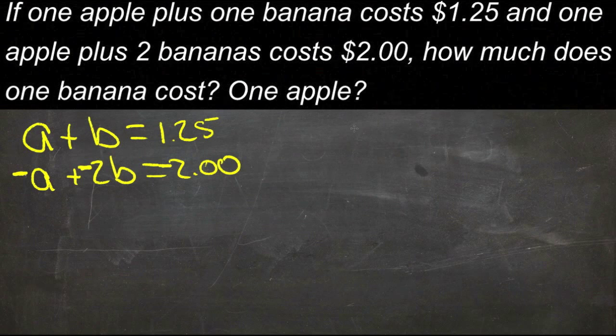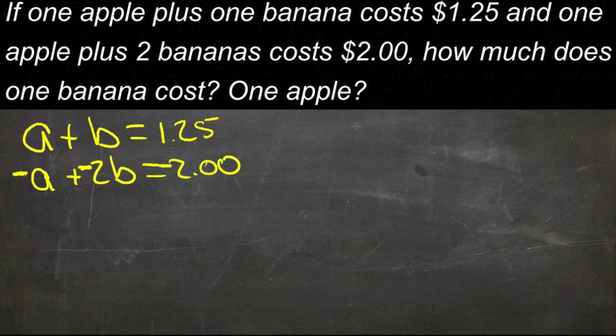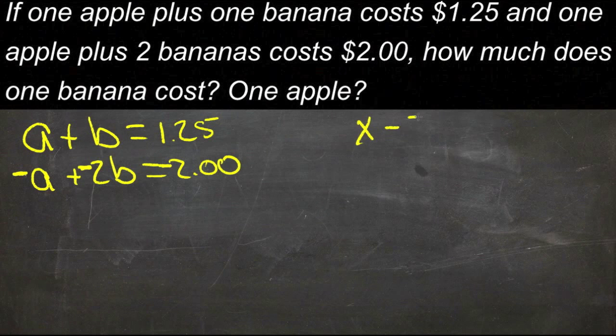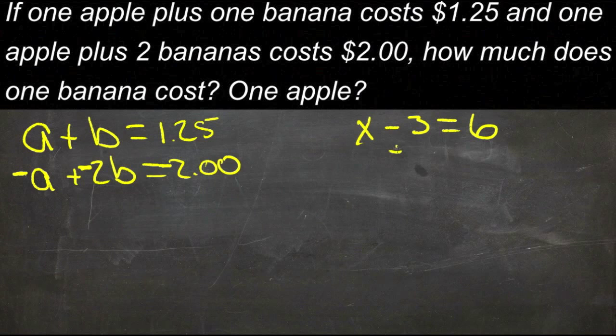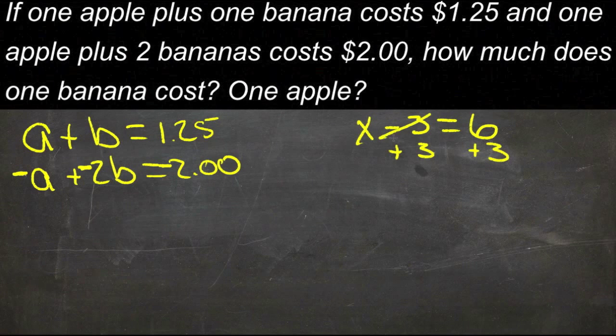Now, the trick we're going to use is the trick that allows us to add the same thing to both sides. Now, you've seen that before like this. If I had, say, x minus 3 equals 6, and I wanted to solve this equation, I'd add 3 to both sides, and then the 3's would cancel, and I'd get x equals 9.